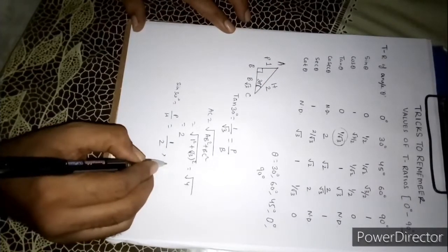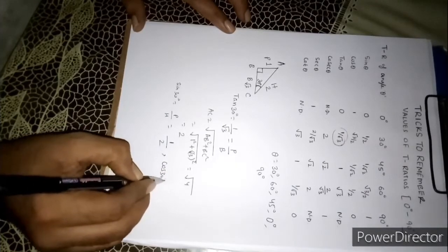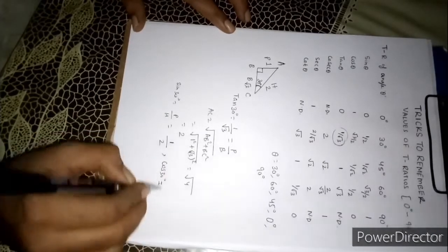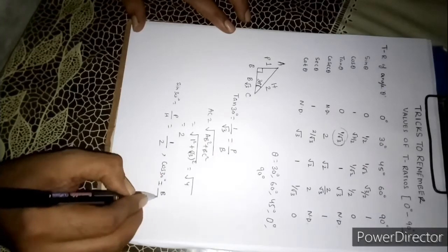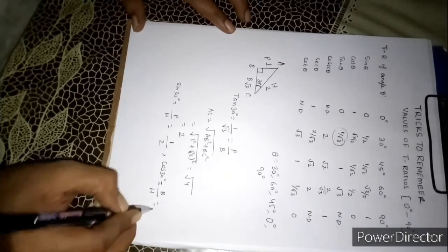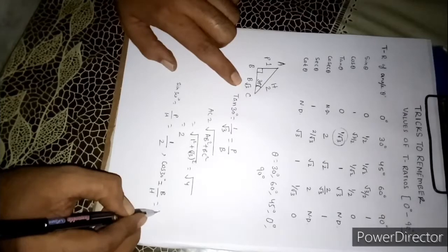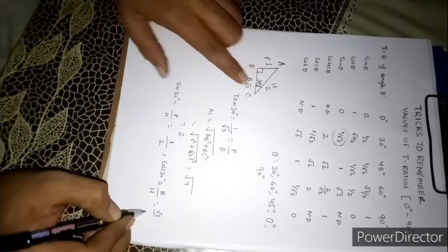If you want to know cos 30, cos theta is base by hypotenuse. What is base? Base is root 3. And hypotenuse is 2.